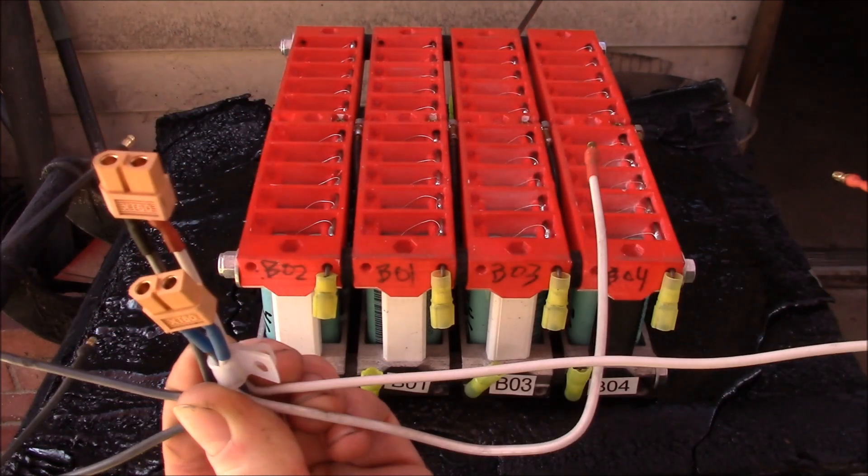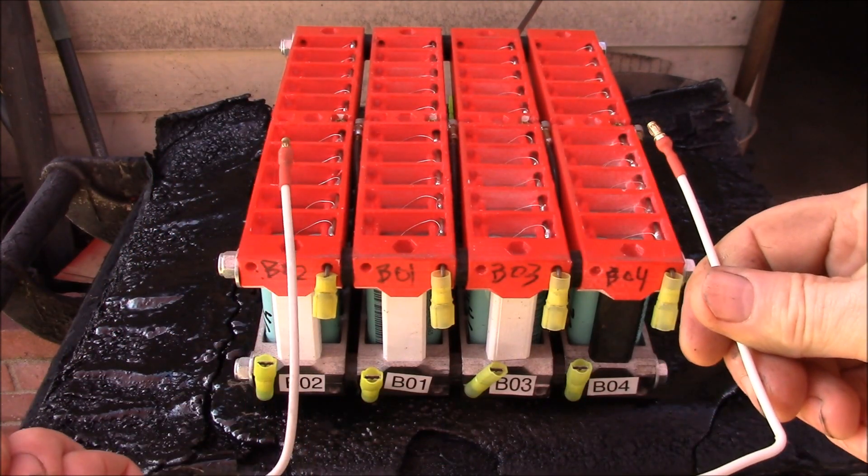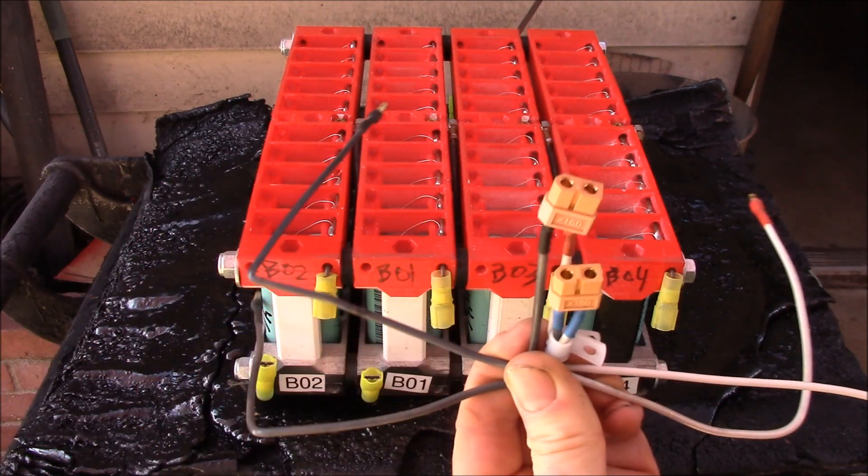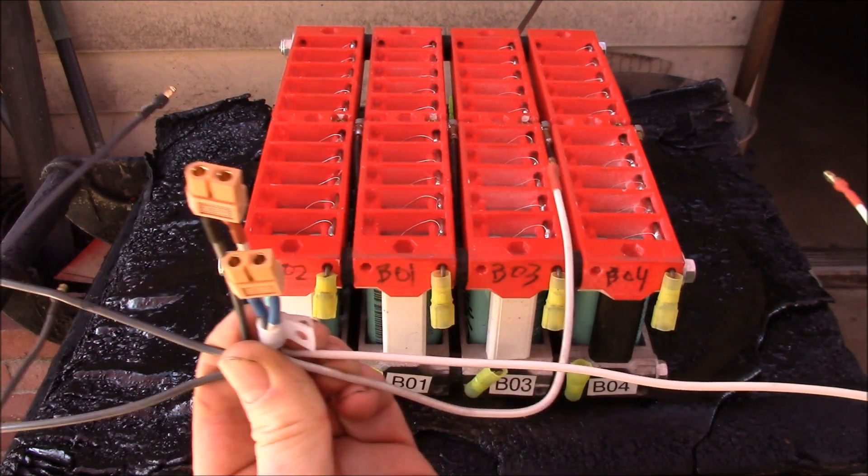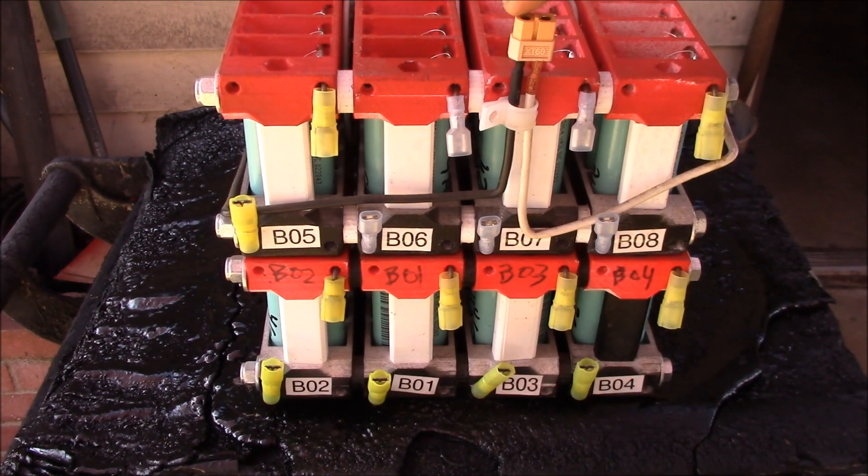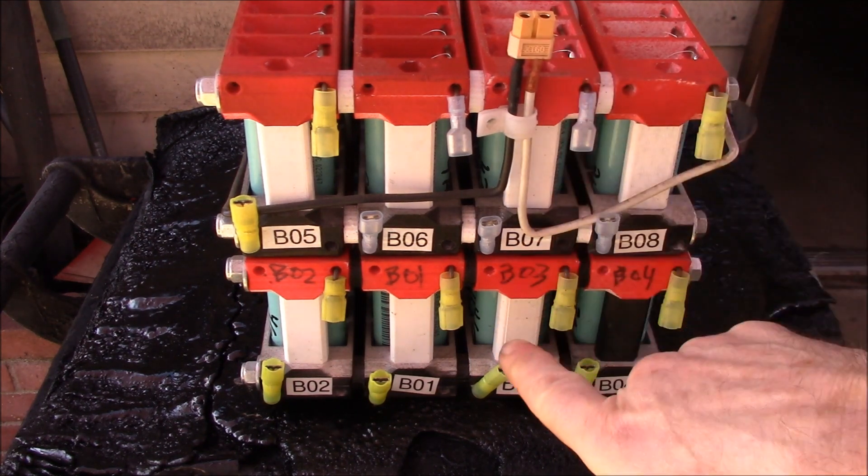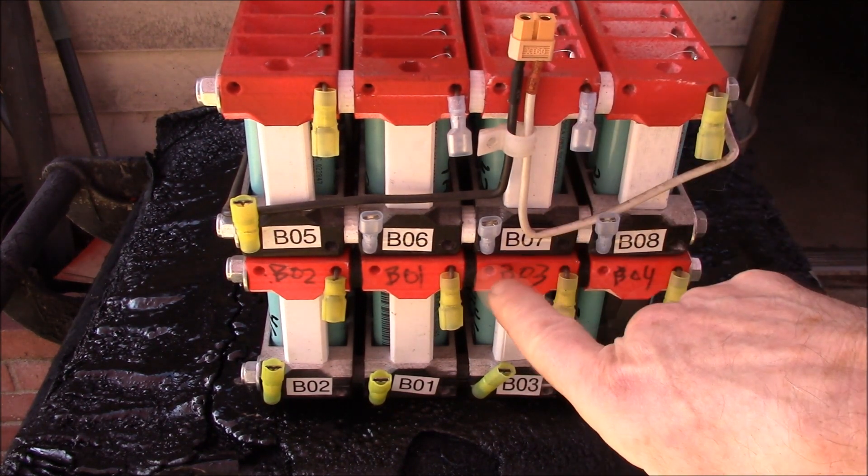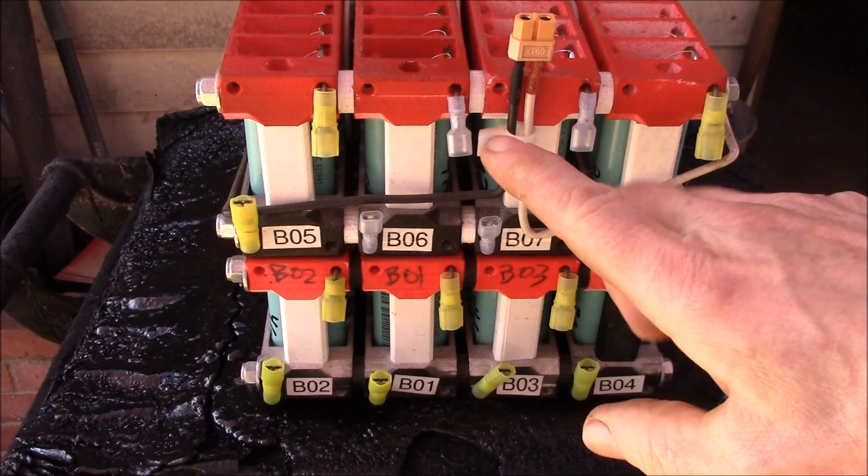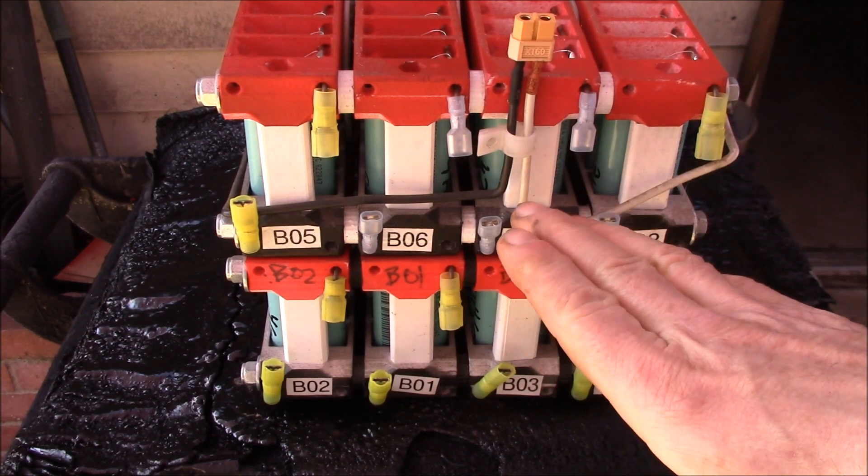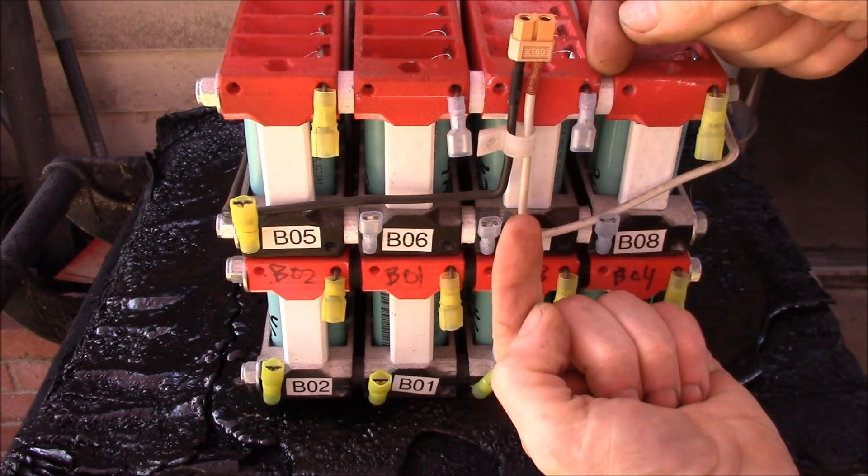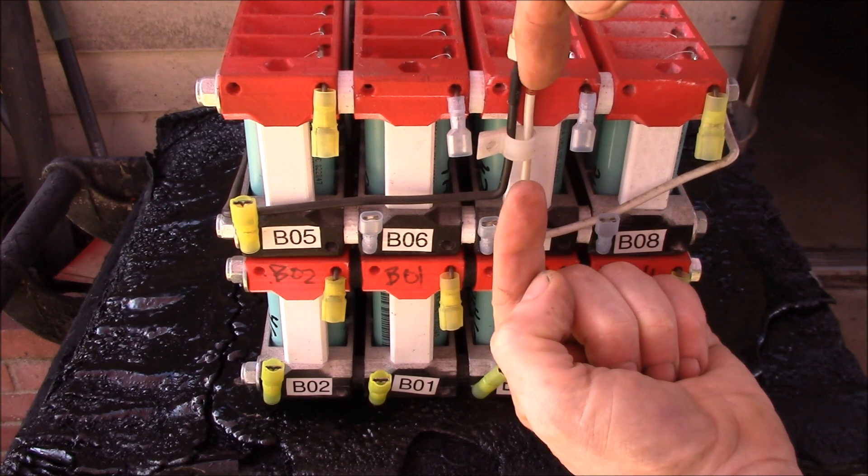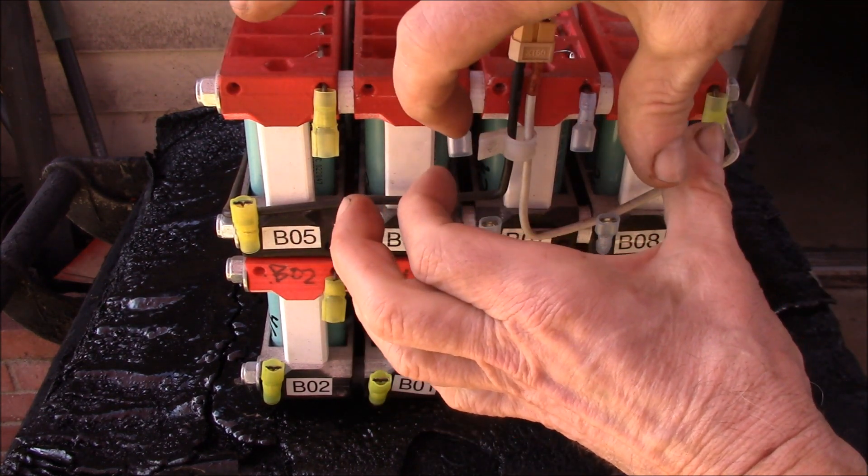So here I've got the short negative side and then I've swapped out the positive lead for a longer wire and that'll fit on the 7s battery. When I built the 4s batteries I had all of the power connections in the same location and I found that was a little problematic because the power lines got in the way of each other.